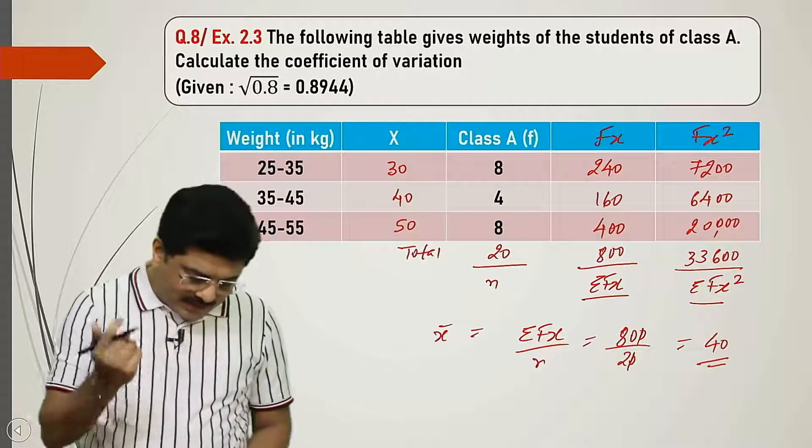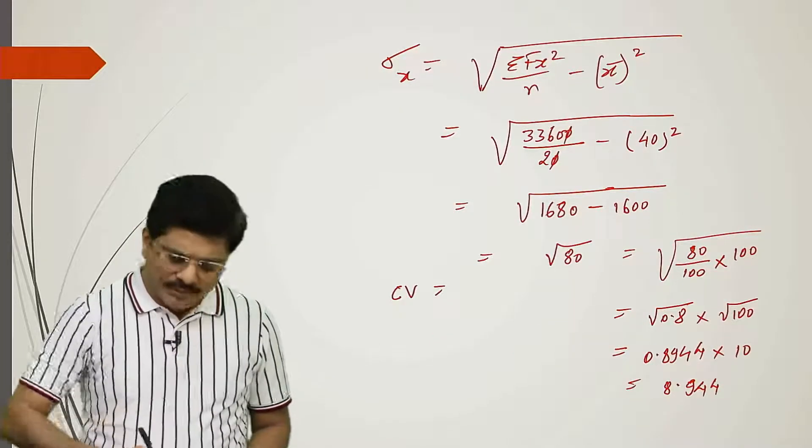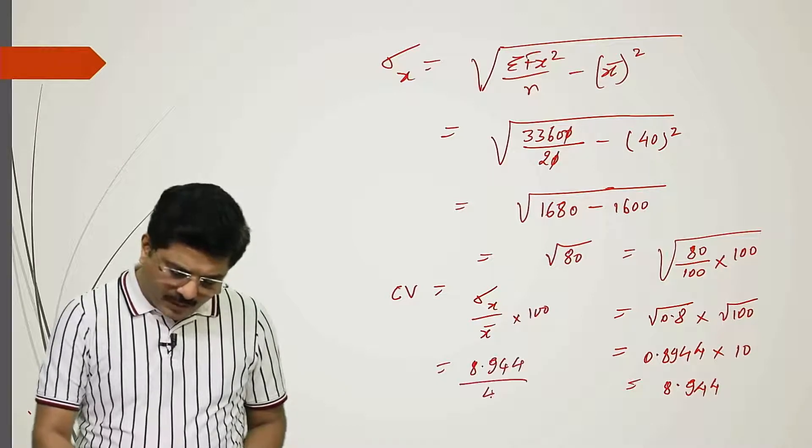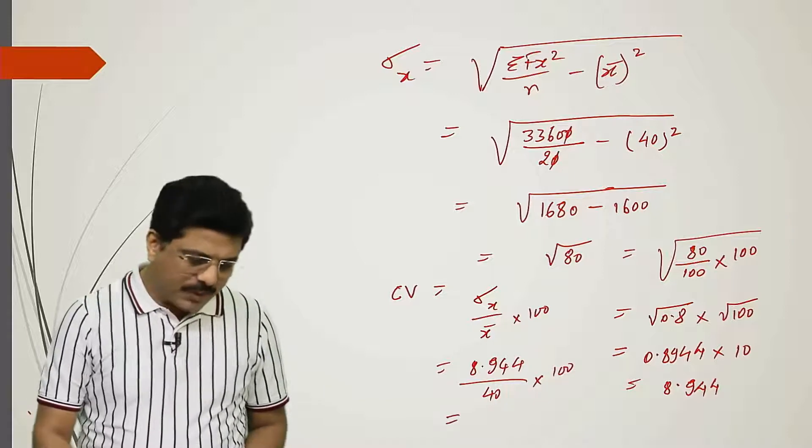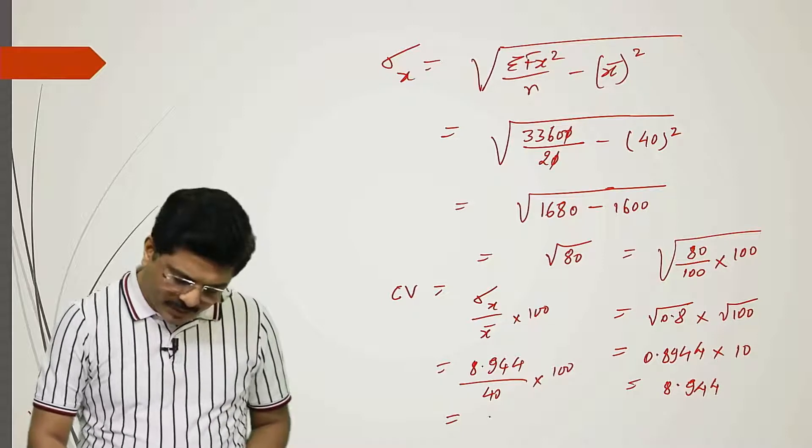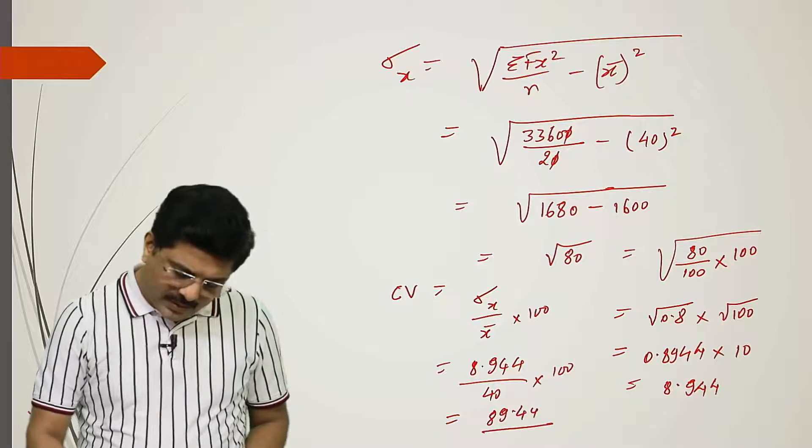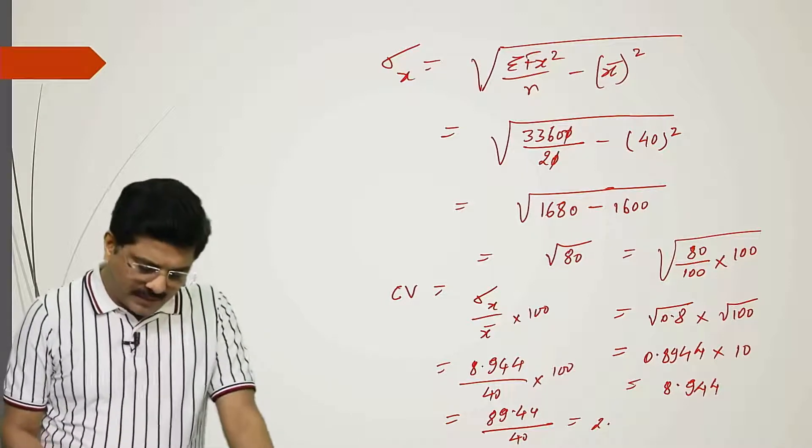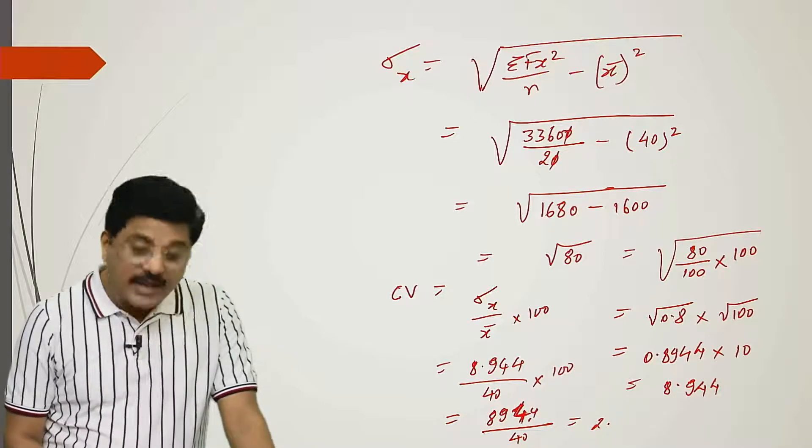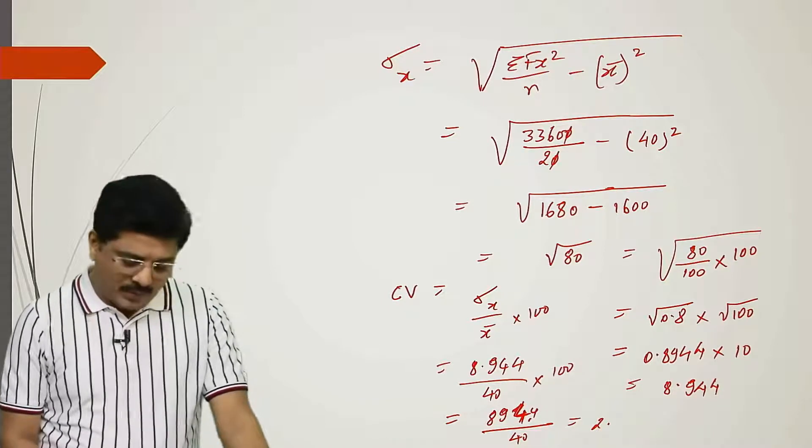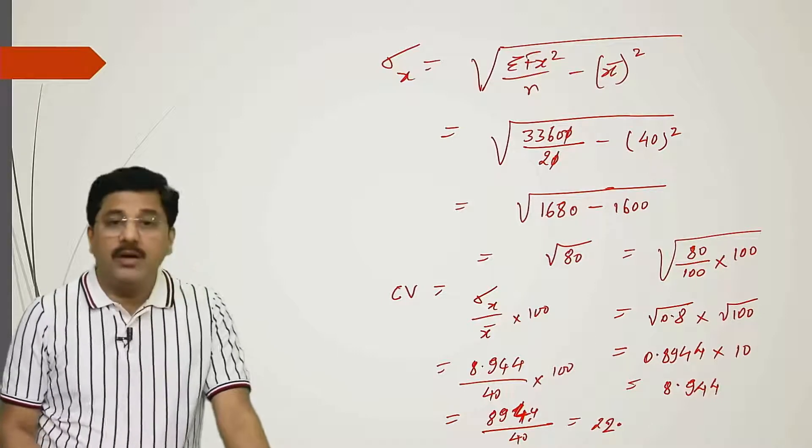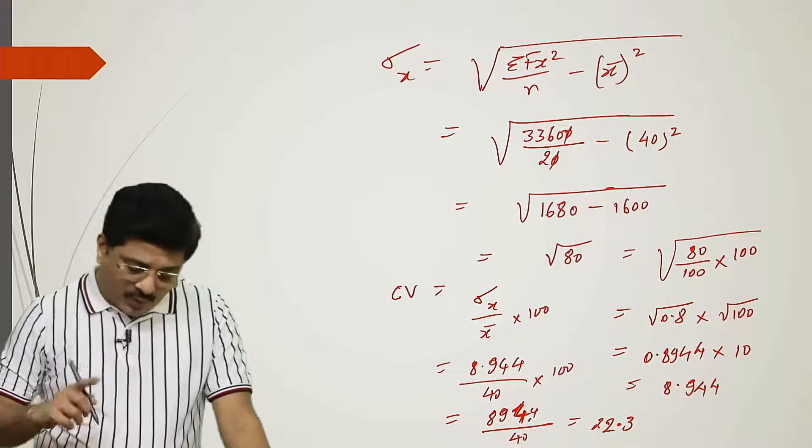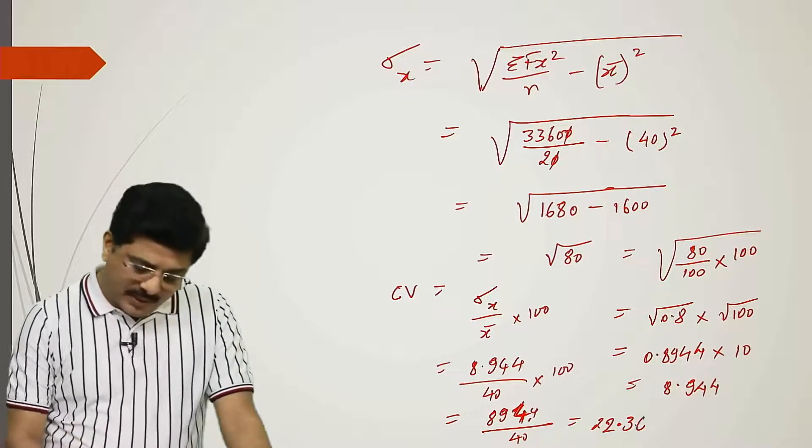What was asked? CV. CV is standard deviation of x upon x bar into 100. That will give 8.944 upon 40 into 100. Solving this: we multiply by 100 to get 894.4 divided by 40. 4 twos are 8, 9 remains 94. Again 4 twos are 8, 14 remains 144. Then 4 threes are 12, giving 22.36 percentage.